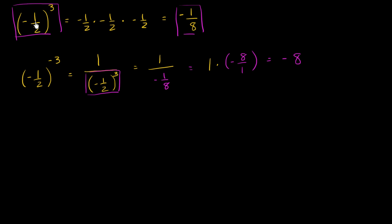This is interesting. Normally when you take a number whose absolute value is less than 1 and raise it to larger and larger exponents, it gets smaller and smaller. When you multiply negative 1 half times 1 half times 1 half, its absolute value normally gets smaller. But when you raise it to a negative exponent, its absolute value gets larger — because you are taking the reciprocal. The negative exponent did not change the sign; you got negative 1 eighth, then negative 8. What it changed is the magnitude.